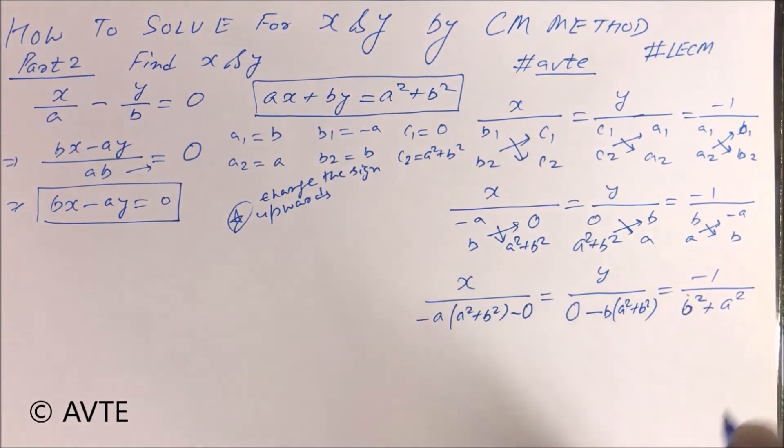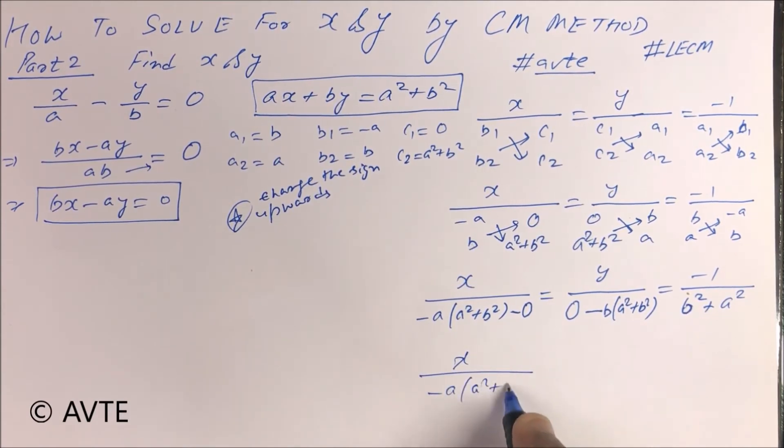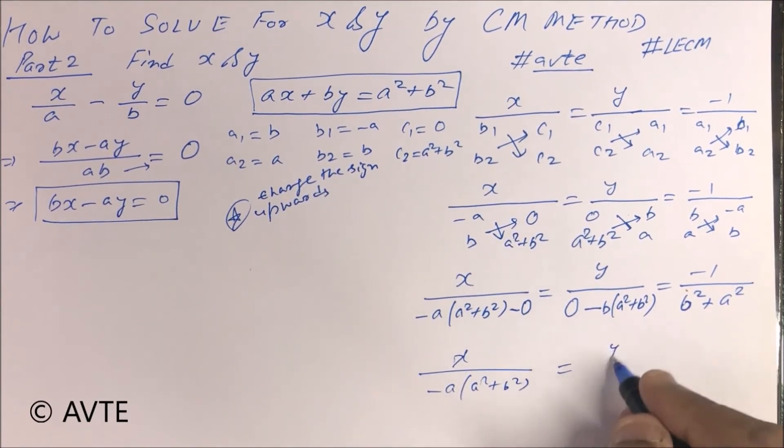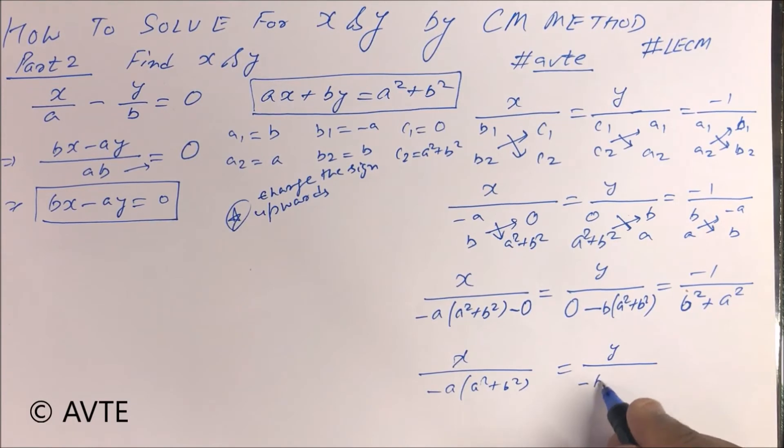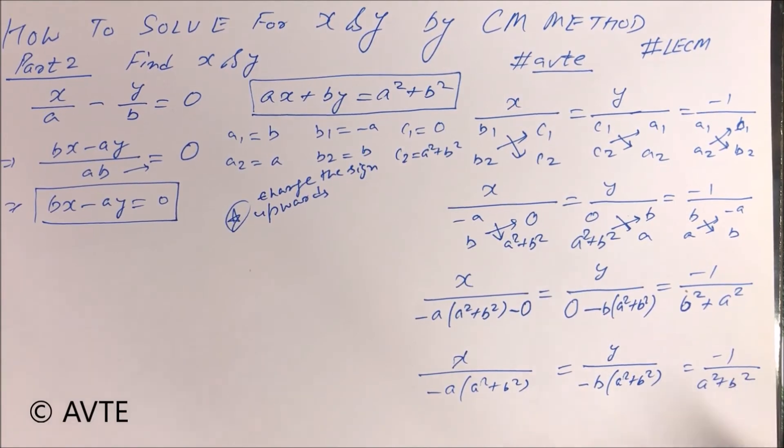and this is your minus 1, A square plus B square. Got it friends? So now we have to compare the variables with the coefficients.